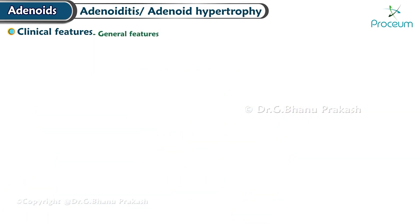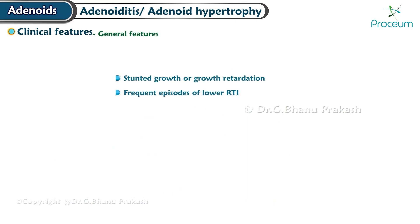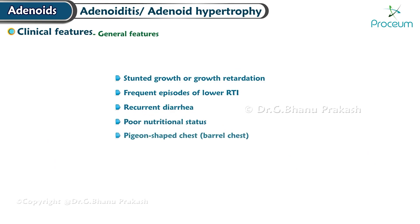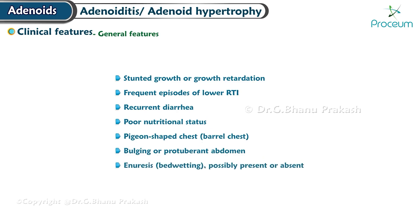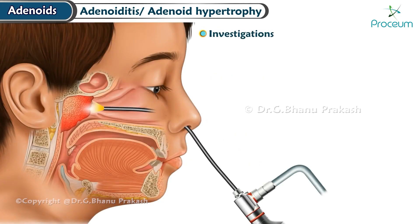Additional features include crowding of teeth particularly in the upper jaw, high arched palate, and hearing loss which can contribute to inattentiveness in children. General features: stunted growth or growth retardation, frequent episodes of lower respiratory tract infections, recurrent diarrhea, poor nutritional status, pigeon-shaped or barrel chest, bulging or protuberant abdomen, and enuresis (bedwetting), possibly present or absent.